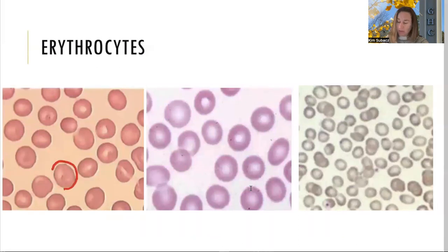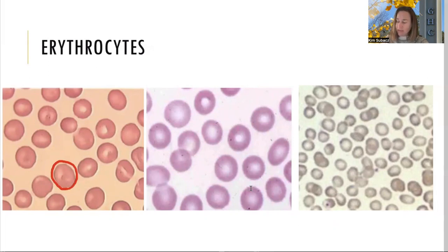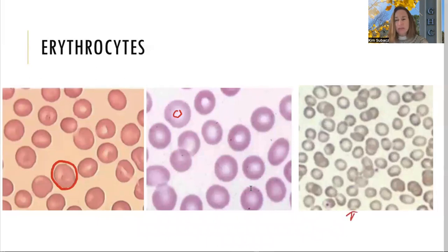The function of erythrocytes is to transport oxygen on the hemoglobin. As far as recognizing them, they are the majority cell — 99% of all the cells in your blood are red blood cells. They are biconcave in shape, so the inside looks a little thinner and lighter in color than the outside, and they are red on the sides.